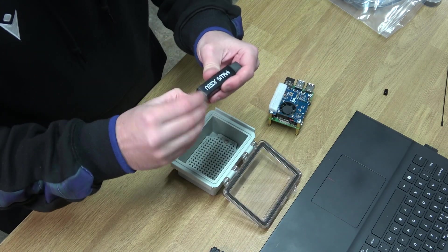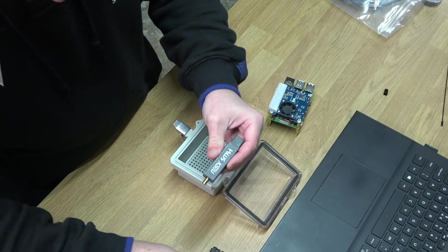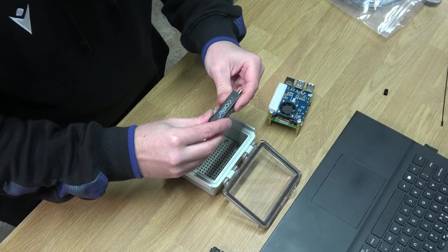We're going to take the little locking ring off of the antenna port and then we're going to drill that through the outside of the box.